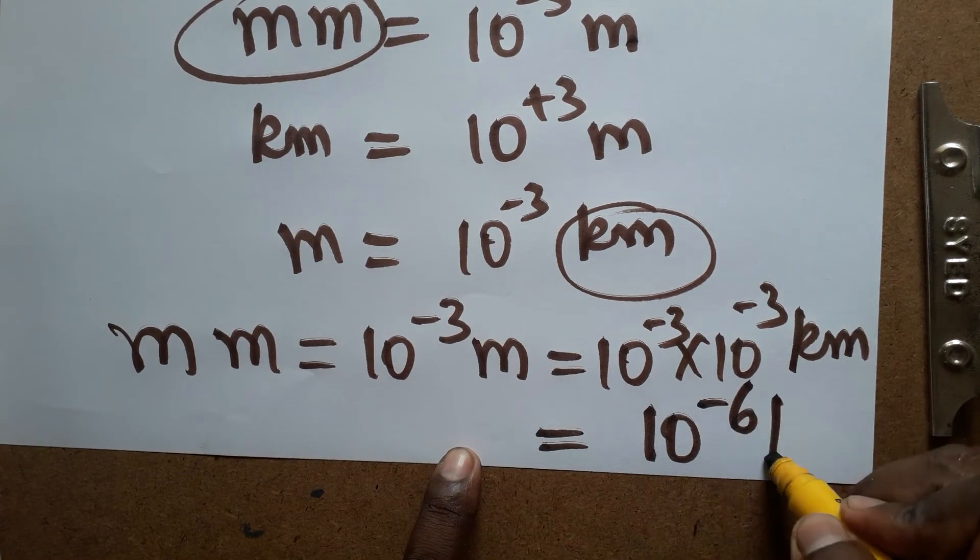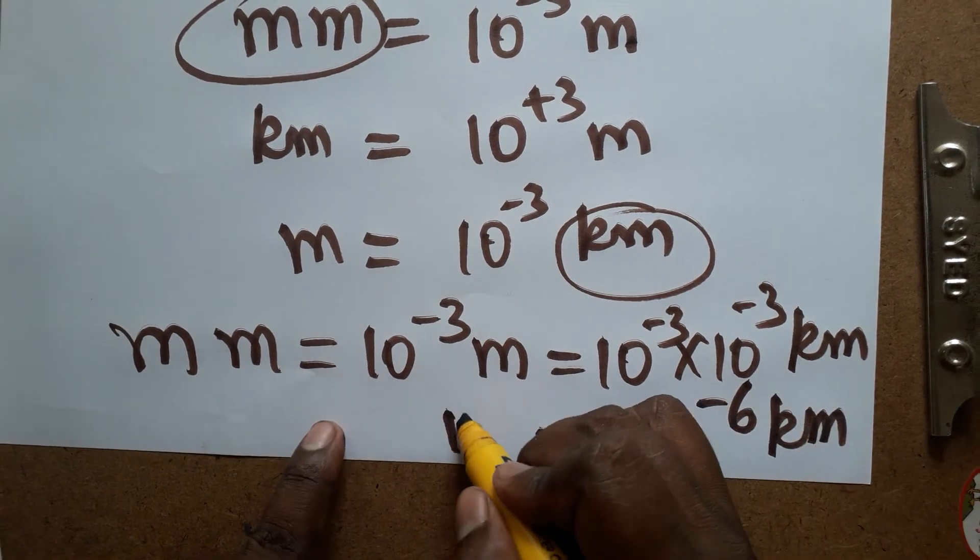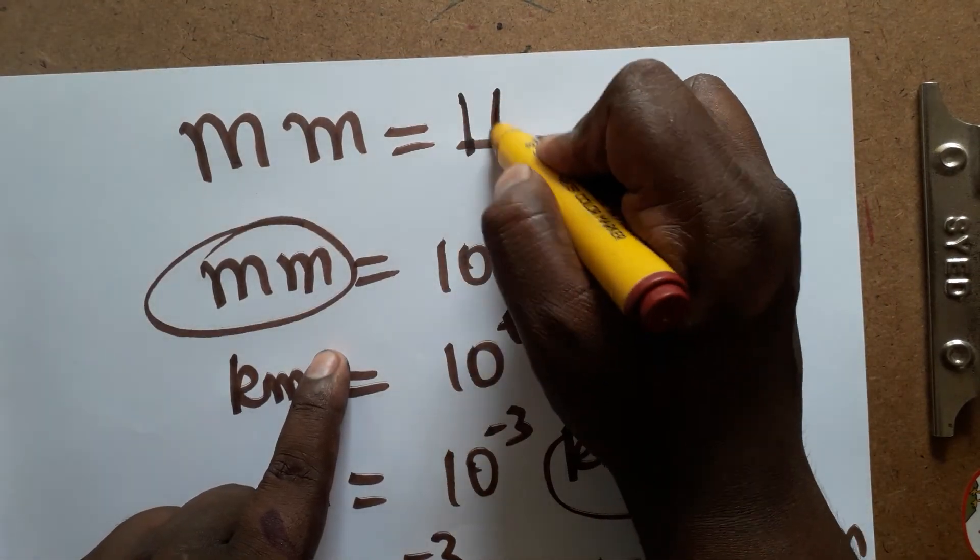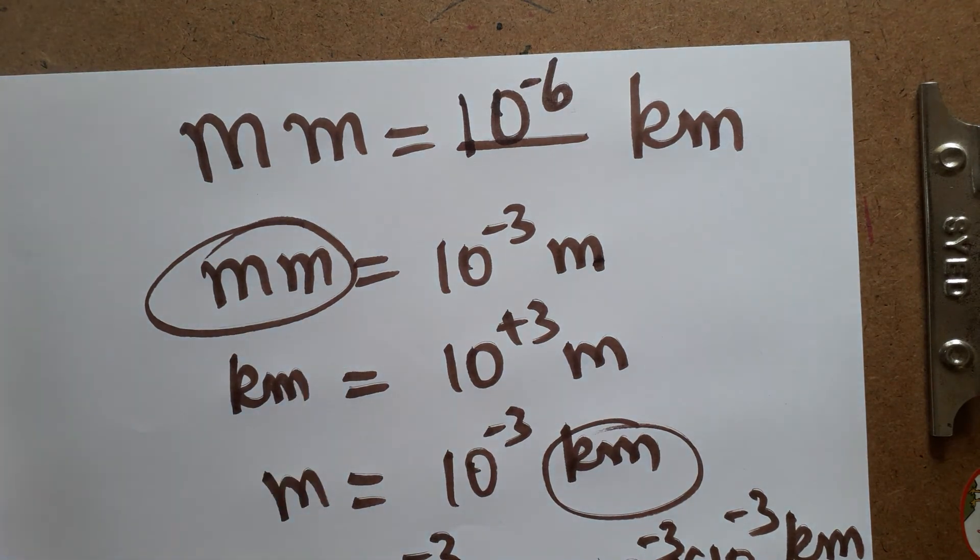Minus 3 minus 3 will get us 10 power minus 6 kilometers. So 1 millimeter is equal to 10 power minus 6 kilometers. Thank you for watching my channel. If you like, please subscribe my channel. Thank you everyone.